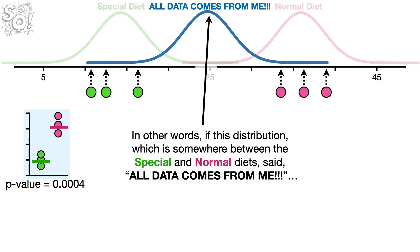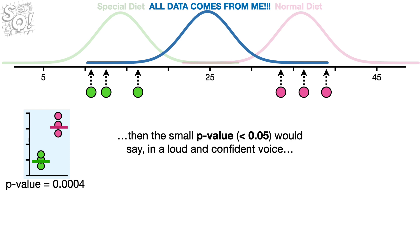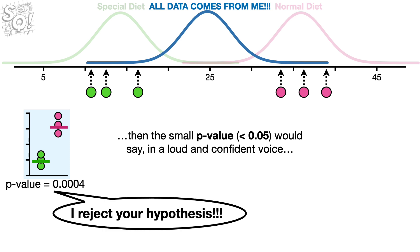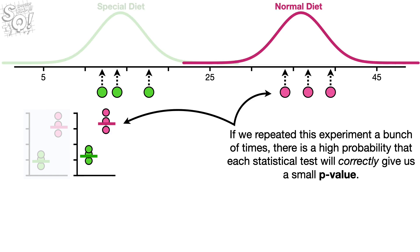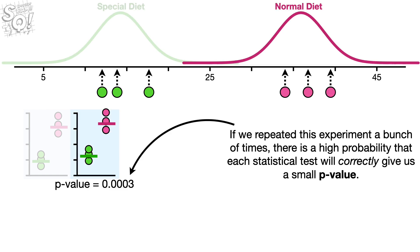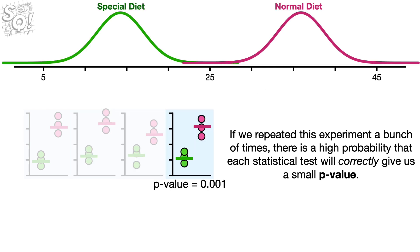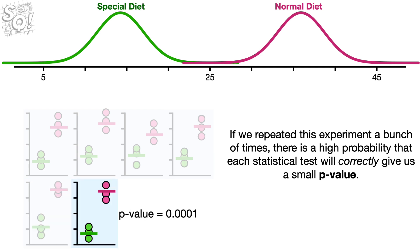In other words, if this distribution — which is somewhere between the special and normal diets — said, 'all data comes from me,' then the small p-value would say, in a loud and confident voice, 'I reject your hypothesis.' If we repeated this experiment a bunch of times, there's a high probability that each statistical test will correctly give us a small p-value.